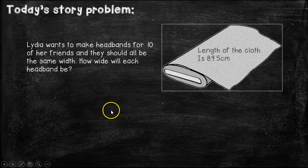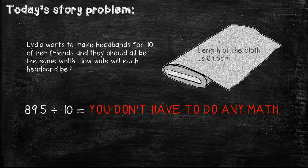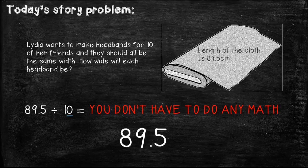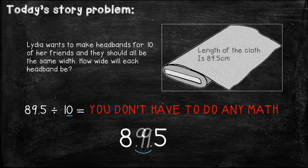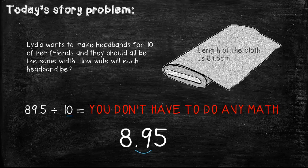So let's go back to our story problem. We knew that Lydia was going to have to take 89 and 5 tenths divided by 10. But before we do any math, we need to count. How many zeros are in the number we are dividing it by? Well, there is 1. In the number 10, there is one zero. So that means we are going to need to move the decimal one place to the left, because it is getting smaller. So 8 and 95 hundredths. That is how you divide 89 and 5 tenths divided by 10. You simply move the decimal point one spot to the left, because there is only one zero in ten.